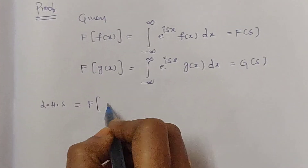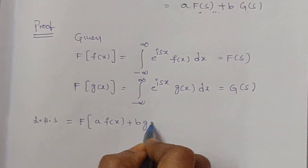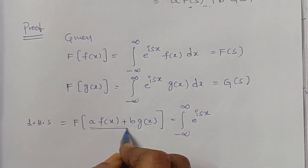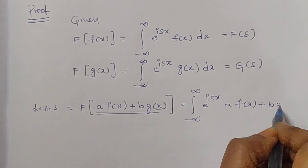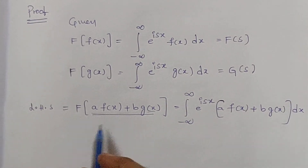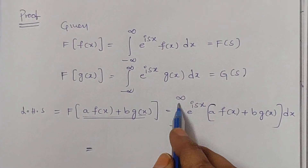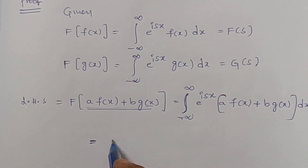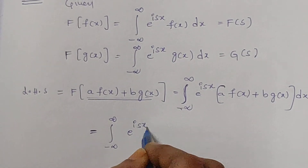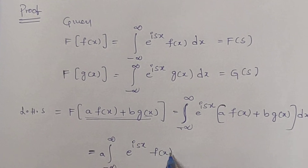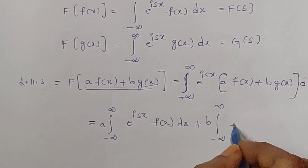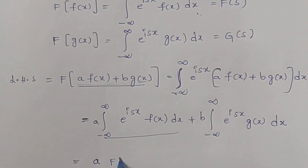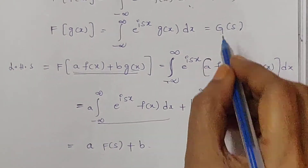Consider the LHS: the Fourier transform of a f of x plus b g of x equals the integral from minus infinity to infinity of e power isx times [a f of x plus b g of x] dx. The integral operator also satisfies the linear property, so according to the linear property of the integral operator, we get a times the integral of e power isx times f of x dx, plus b times the integral of e power isx times g of x dx.